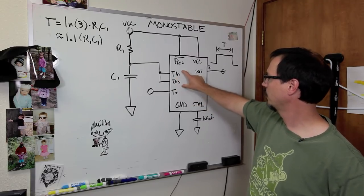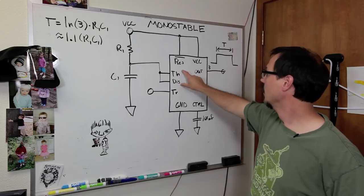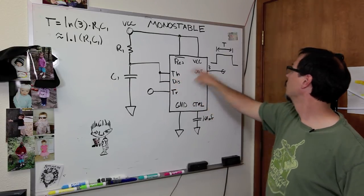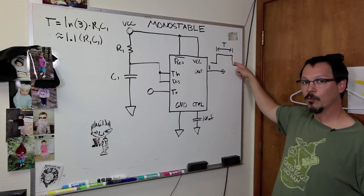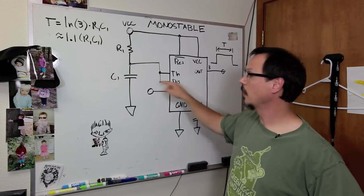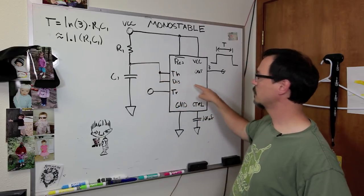You see that discharge and threshold are connected here, all right? So, this line will go up to the threshold voltage. When it gets to the threshold voltage, the output will go low, okay? When the output goes low, discharge gets activated, C1 discharges straight to ground.